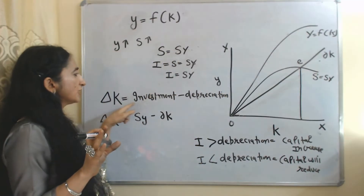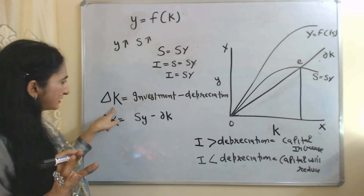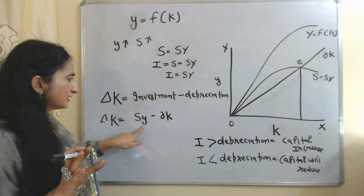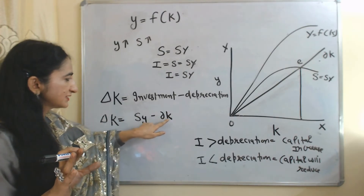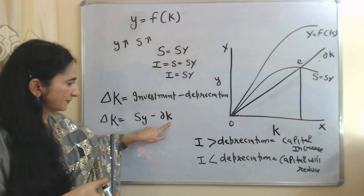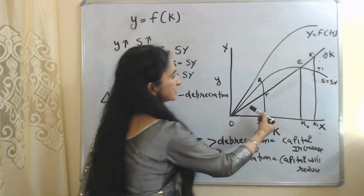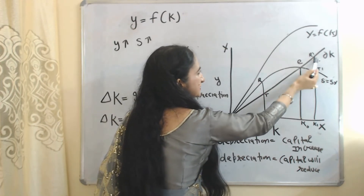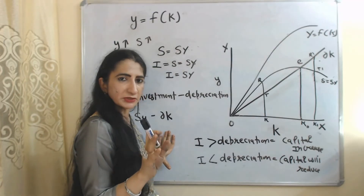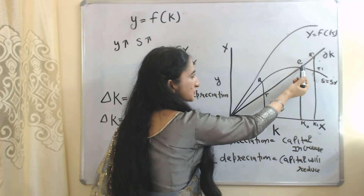Suppose labor is constant and we are only changing capital. Change in capital equals investment minus depreciation: ΔK = I - δK. Since investment equals sY, we can write ΔK = sY - δK. Here δK represents depreciation — the reduction in value of an asset due to use. In the diagram, a straight line represents depreciation δK, and the curve sY represents investment. When depreciation equals investment, we reach the steady state equilibrium point.